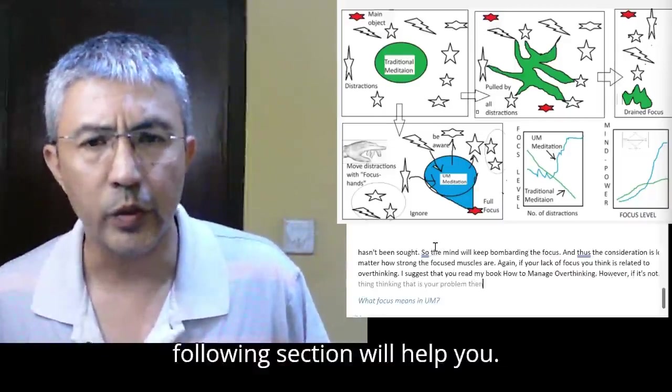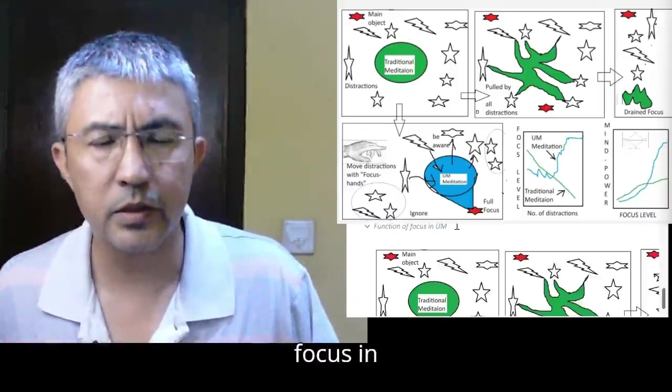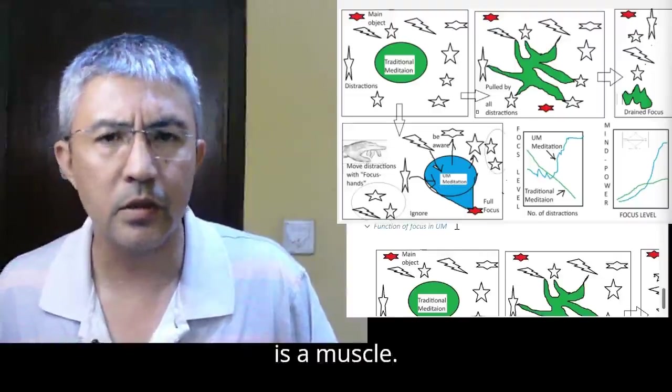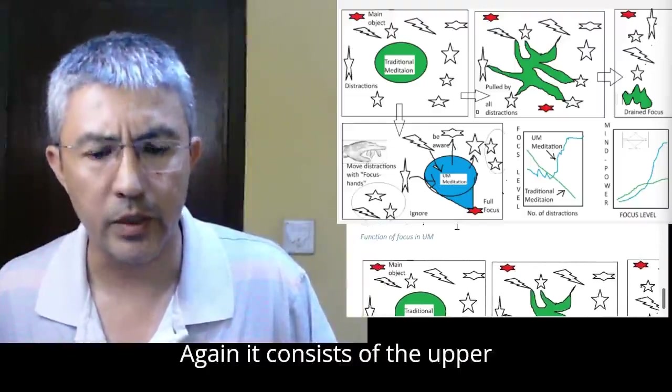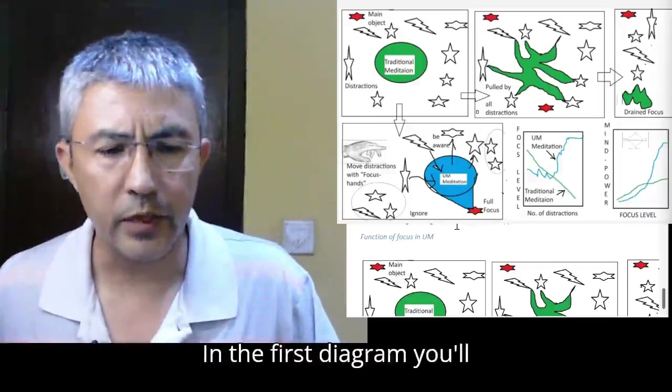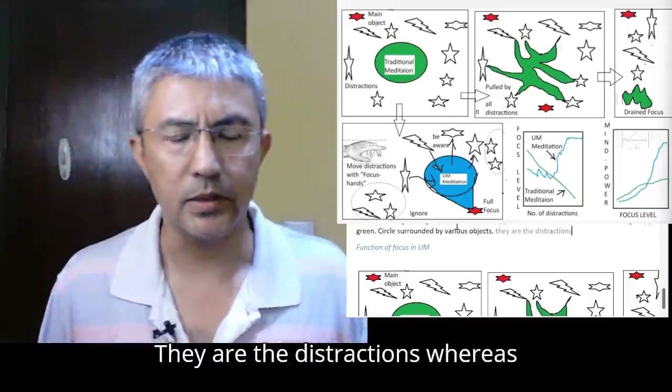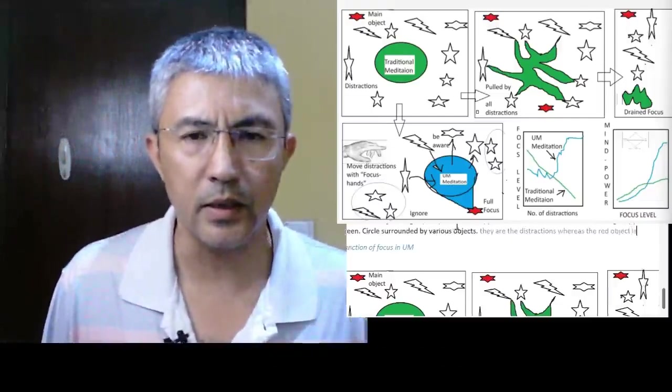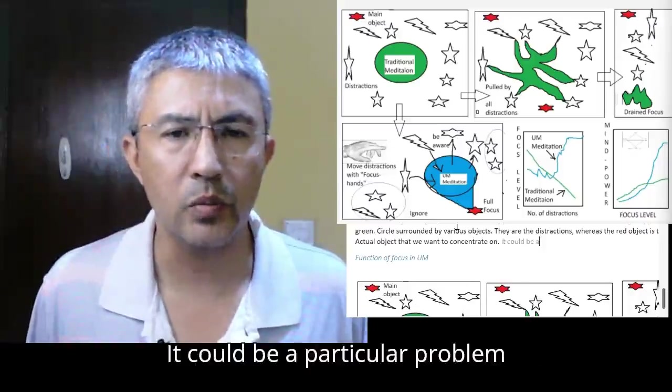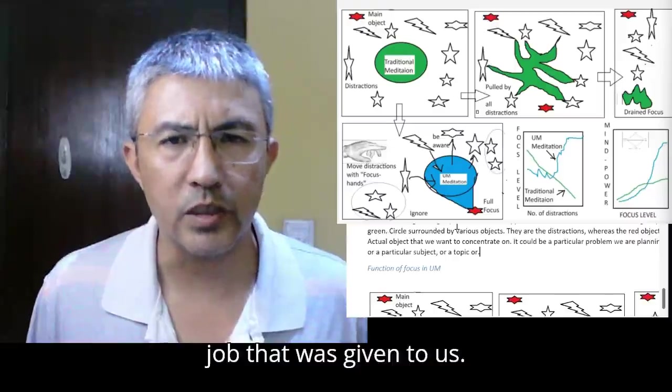However, if it's not overthinking that is your problem, then the following section will help you. As I mentioned earlier, focus in my unified motivation theory is a muscle. So take a look at the diagram. It consists of the upper set and the lower set.